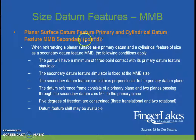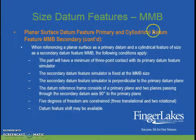This is a summary of that condition. The primary datum feature is a surface; the secondary is a cylindrical datum at MMB. The part will have a minimum three-point contact on the primary. The secondary datum feature simulator is fixed in size and perpendicular to the primary. The datum reference frame consists of a primary plane and two planes passing through the secondary datum axis at 90 degrees to the primary. Five degrees of freedom are constrained: three translational, two rotational. Datum feature shift may be available.